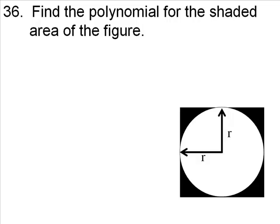Number 36: Find the polynomial for the shaded area of the figure. We want to find the shaded area of the figure, that part in black up there, the four corners.